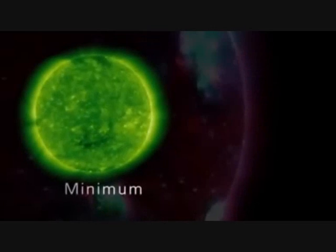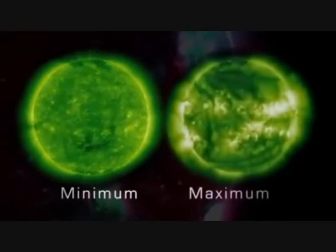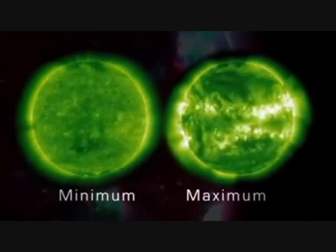During one cycle, the number of sunspots, a good indicator of solar activity, goes from low to high and back down to low. Solar minimum represents a period of time when sunspot numbers are relatively low, and solar maximum represents a period when sunspot numbers are relatively high.